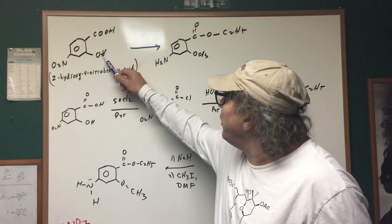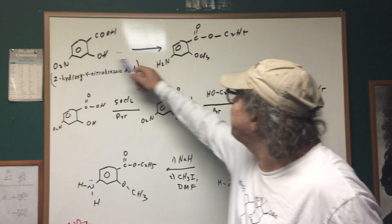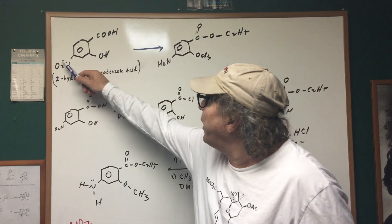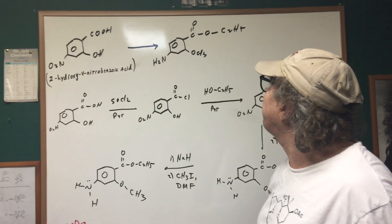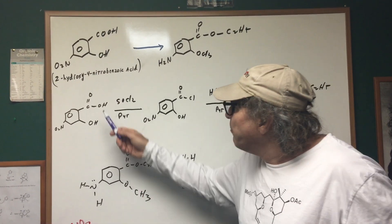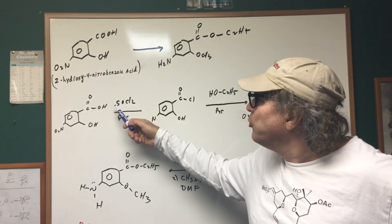Well, it looks to me that we're going to have to do a Williamson ether synthesis here. We're going to have to reduce the nitro group. And it looks like we're going to have to add on an ethoxy group.